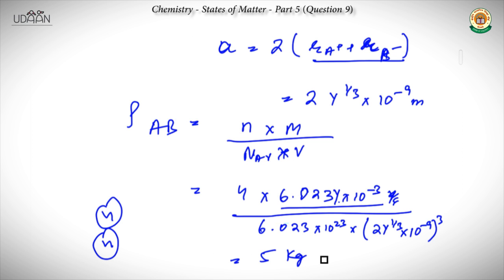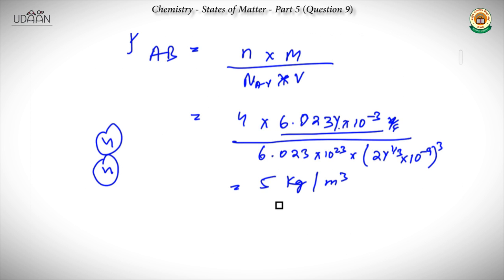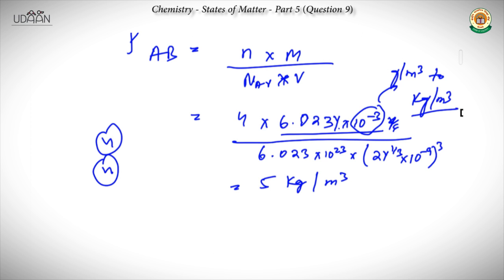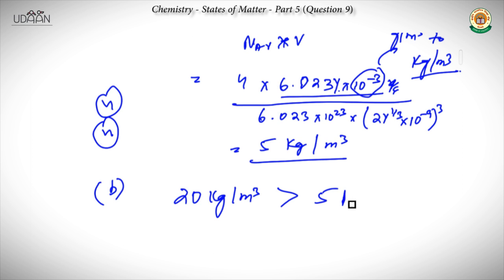Solving gives a density of 5 kg per meter cube. We applied a factor of 10 to the power minus 3 to convert from gram per meter cube to kg per meter cube. For the second part, the observed density is 20 kg per meter cube, which is obviously greater than the theoretical density of 5 kg per meter cube.